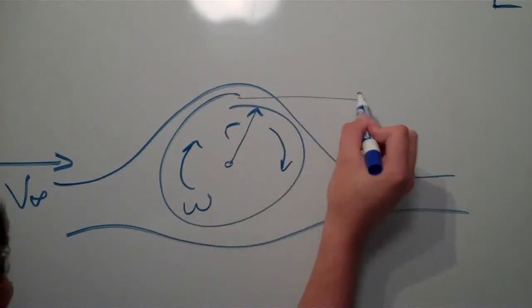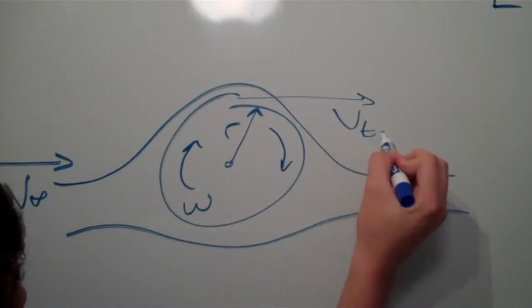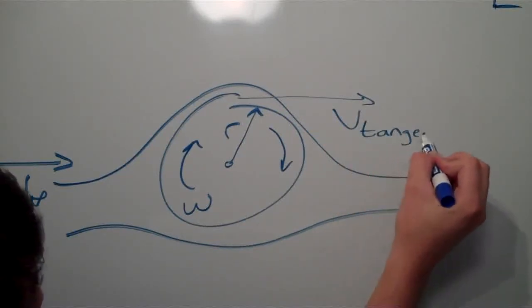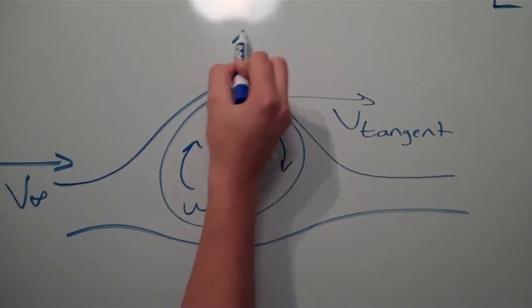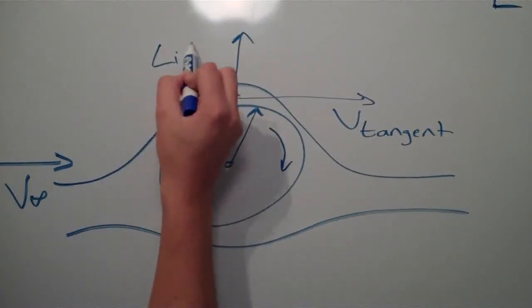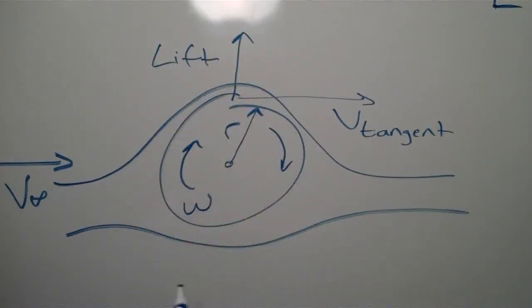Because of rotation and boundary layer effects, fluid parcels along the top of the cylinder are sped up while the flow on bottom is slowed down. This creates the streamline pattern shown here.